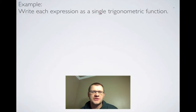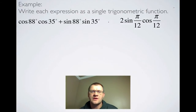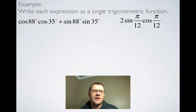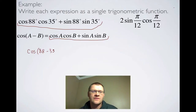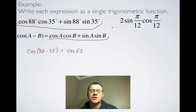Here's our first example: write each expression as a single trigonometric function. The first expression is cos88·cos35 + sin88·sin35. Looking at your list of identities, you should see that this looks an awful lot like the cosine difference identity — cos, cos, plus sine, sine. So cos88·cos35 + sin88·sin35 is really cosine of these two angles subtracted: cosine of 88 minus 35, which is cosine of 53. This is just getting you used to using your identities to make substitutions, which is a huge part of trig identities.